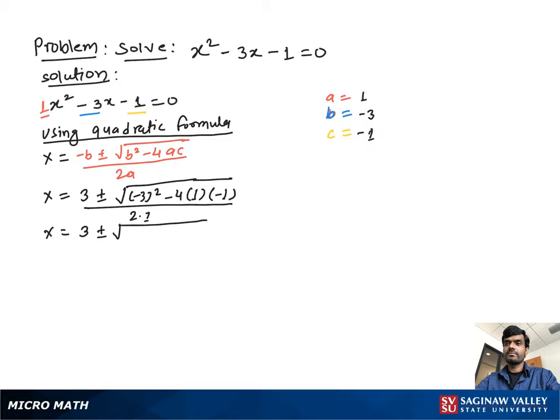Then x is equal to 3 plus minus square root, negative 3 squared is 9. Then minus times minus will be plus, and 4 times 1 will be 4, over 2. Then we get x equal to 3 plus minus square root 9 plus 4 is 13 over 2.